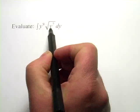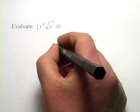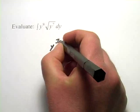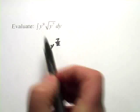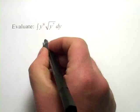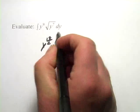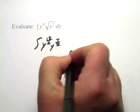So I'm going to rewrite the square root of y to the 7th as y to the 7 halves. And I'm going to rewrite y to the 9th as y to the 18 halves. Same thing. So we have the integral of that.